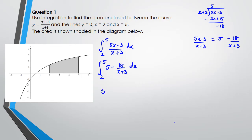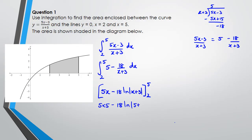Now I integrate it. When I integrate 5, I get 5x. When I integrate 18 over (x + 3), I get 18 ln of (x + 3). My limits are between 5 and 2. Substituting the values: 5 times 5 minus 18 ln(5 + 3), minus — make sure you always put a bracket around it — 5 times 2 minus 18 ln(2 + 3).